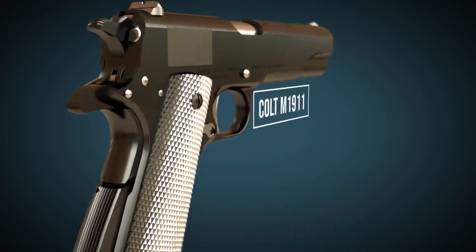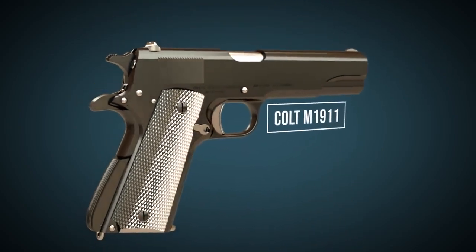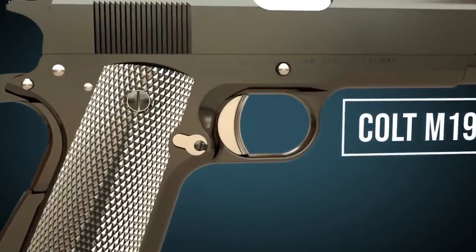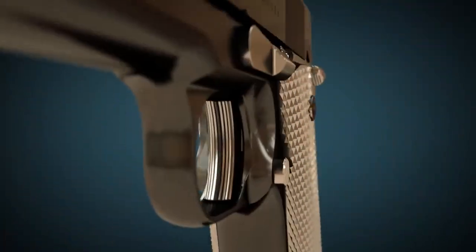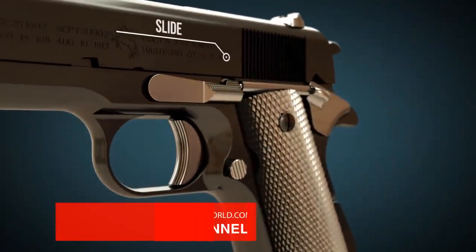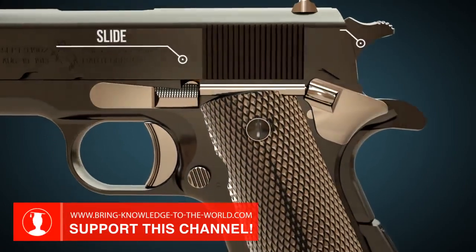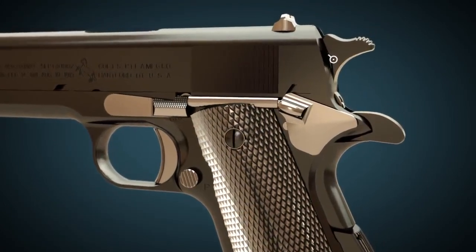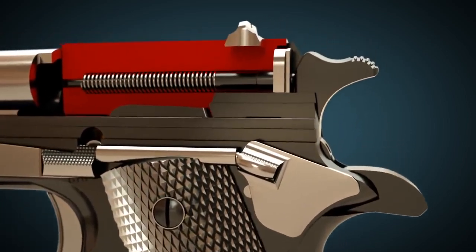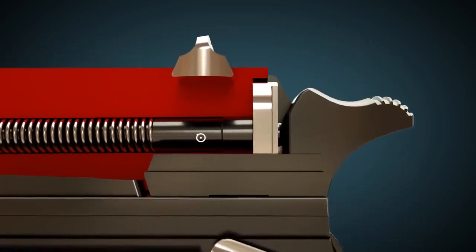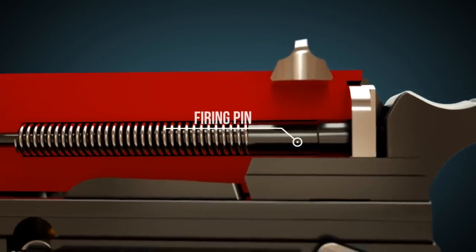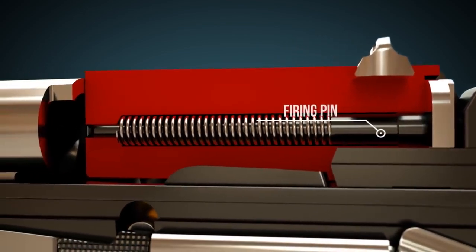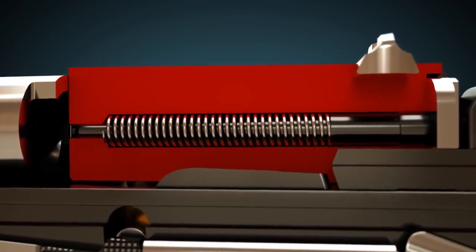In this video we will explain how handguns and pistols work. Let's take a look at the most important parts. The slide is located in the upper part of the weapon. The hammer spur is often called simply hammer. The slide houses the firing pin on which the hammer spur hits when the trigger is pressed. A crucial part of the gun is the barrel.